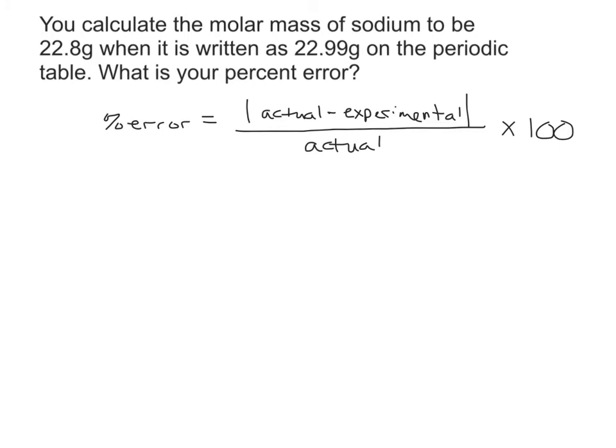We're going to subtract our actual minus our experimental, and notice how the formula says absolute value. We just want the positive number version of it. So we have 22.99 minus 22.8. A lot of people ask me, instead of doing the absolute value, can I just take the bigger number minus the smaller number? And you can. It gives you the same exact answer.